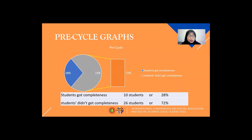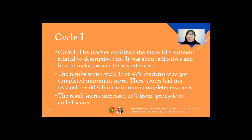Pre-cycle graph: students who got completeness were 10 students or 28%. Students who did not get completeness were 26 students or 72%.